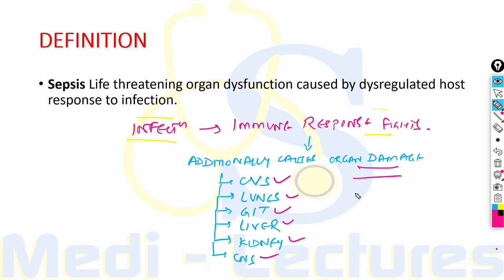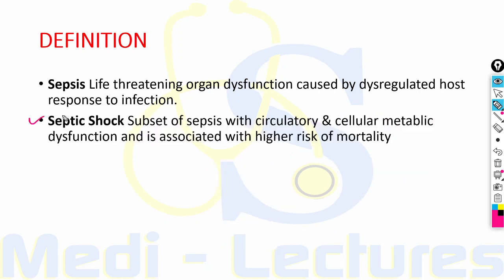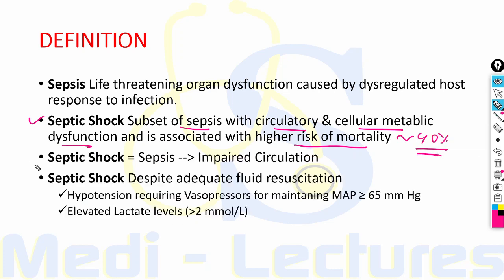Septic shock is a subset of sepsis with additional circulatory and cellular metabolic dysfunction and is associated with higher risk of mortality. Mortality is around 40 percent in patients of septic shock. Septic shock is basically sepsis leading to impaired circulation which leads to cellular hypoxia.